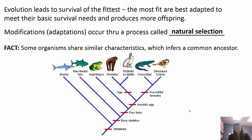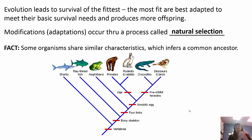Evolution leads to survival of the fittest. But survival of the fittest doesn't just mean being in the best physical shape — it means survival of the fittest in that specific environment. The most fit are best adapted to meet their needs and produce more offspring. Modifications occur through natural selection — if you are successful at producing offspring, your genes are the ones passed on and selected. Some organisms share similar characteristics, which infers common ancestry. A cladogram shows when new traits appeared and which organisms had those traits.